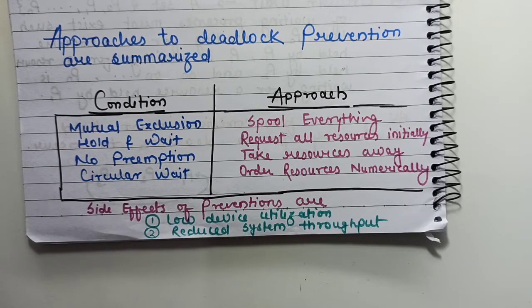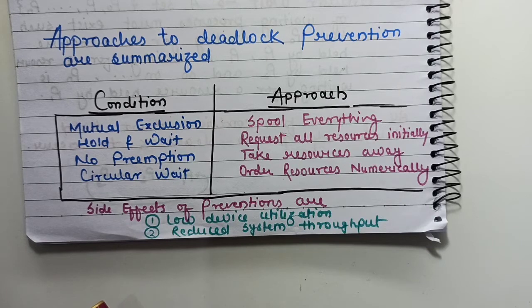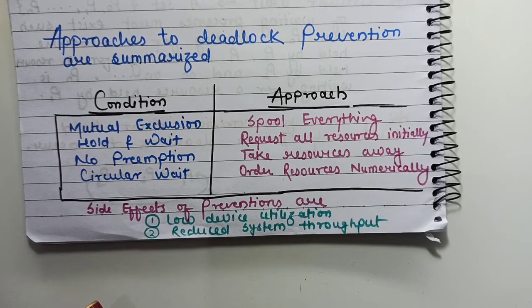What were the side effects of deadlock prevention? The first is low device utilization. For example, if a process requests a tape drive, DVD drive, and printer initially, but the printer is only needed at the end after copying from tape to DVD, during the copy phase that printer could have been used by another process. But we allocate it upfront, leading to very low device utilization.